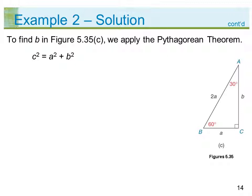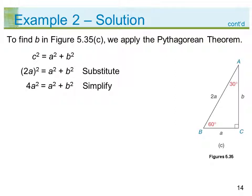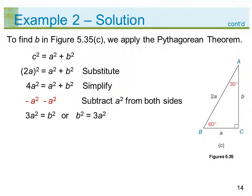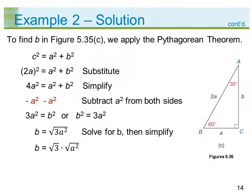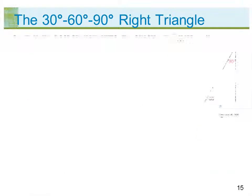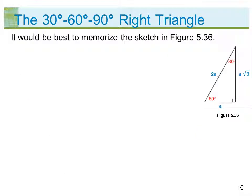Applying the Pythagorean Theorem: c squared equals a squared plus b squared. Substituting, the quantity 2a squared equals a squared plus b squared, so 4a squared equals a squared plus b squared. Subtracting a squared from both sides gives 3a squared equals b squared. Therefore b equals the square root of 3a squared, which simplifies to b equals the square root of 3 times the square root of a squared, giving b equals a square root of 3. Thus, length AC equals a square root of 3.